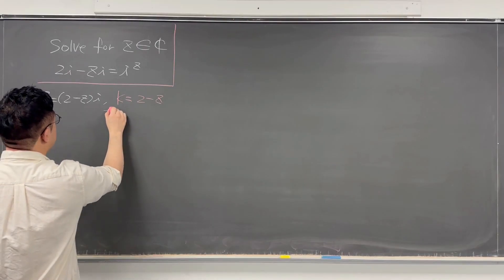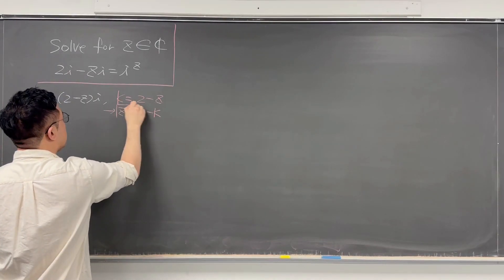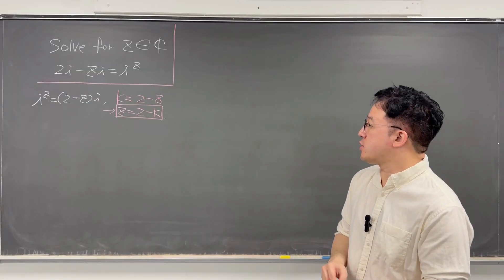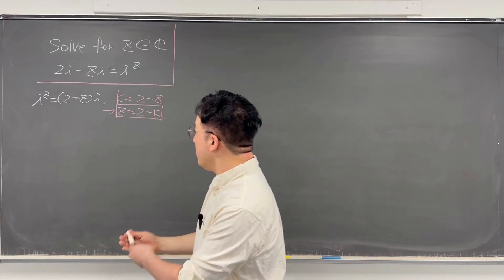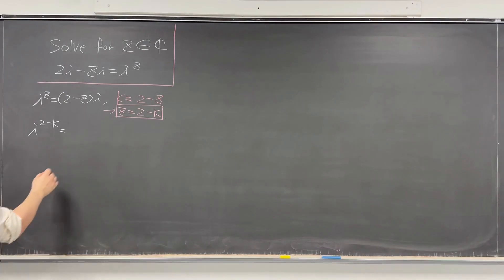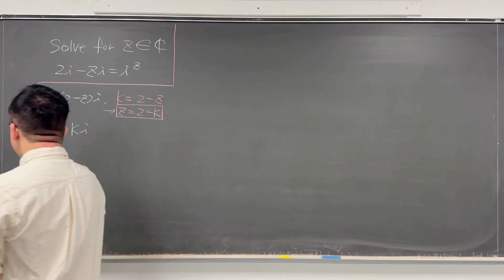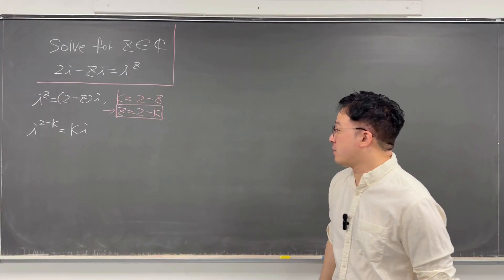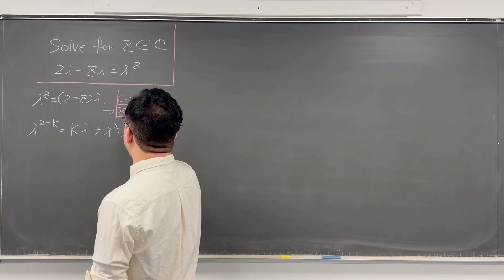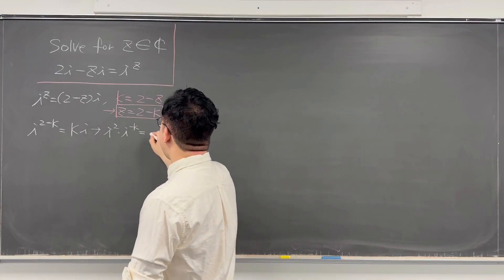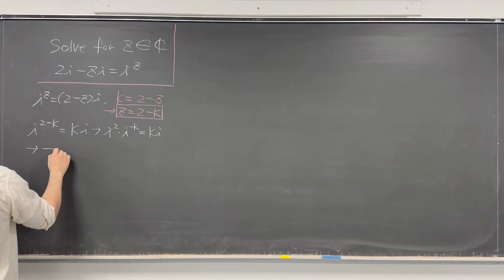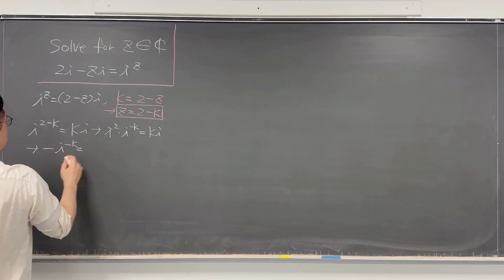So then z is going to be 2 minus k. Let's work this out using this expression. We have i to the power of z, which is 2 minus k, so i to the power of 2 minus k equals k times i. So from this, we can say i squared times i to the power of negative k equals ki. That is, since i squared is negative 1, negative i to the power of negative k equals ki.